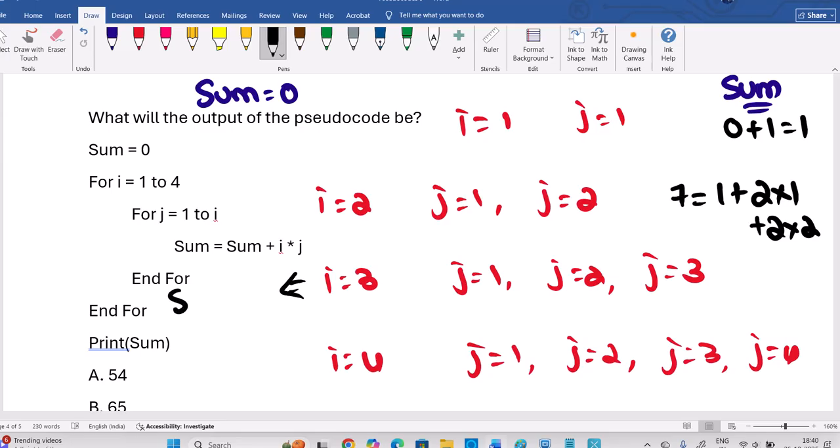Now, next in this row, already sum is 7. 7 plus 3 into 1. Then next loop 3 into 2. Next time 3 into 3. Okay? So all together, 3 into 6, 18. This is 18. 18 plus 7, 25 is what? Okay? After this third loop.